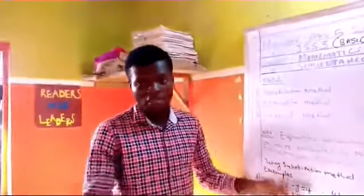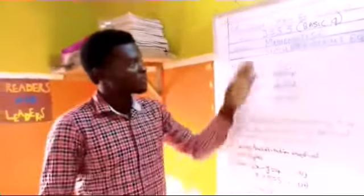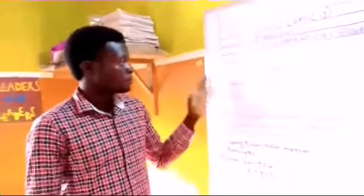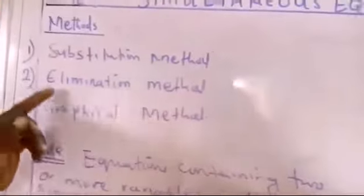There are several methods you can adopt to solving Simultaneous Equation. But in this class, we are going to look at only three: substitution method, elimination method, and graphical method.